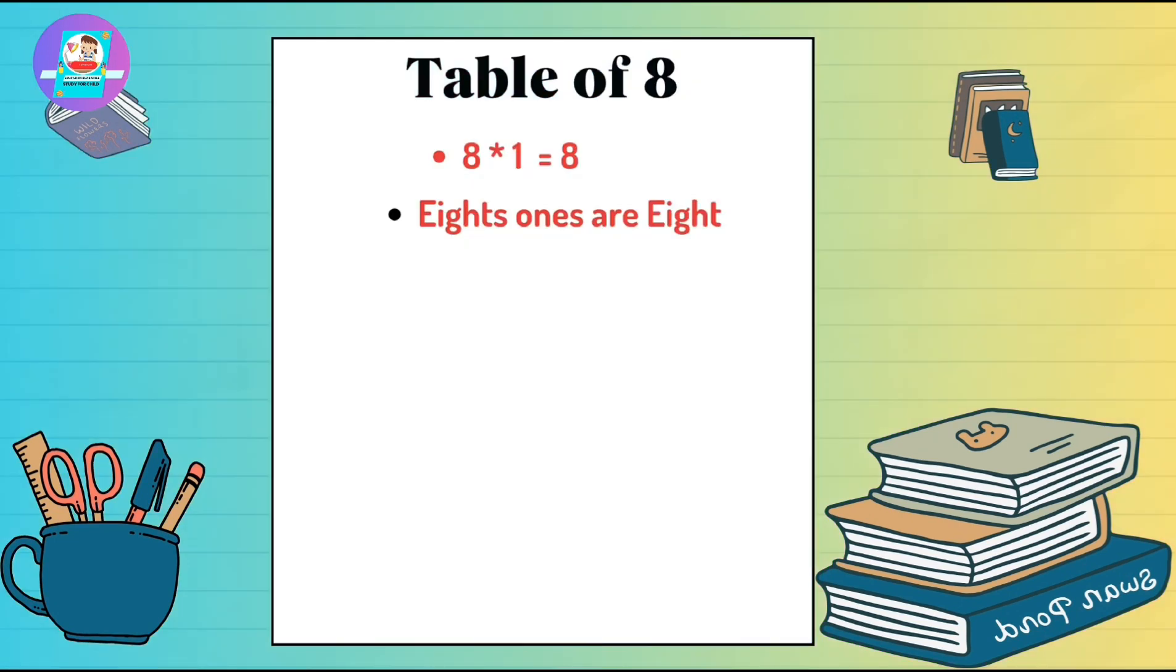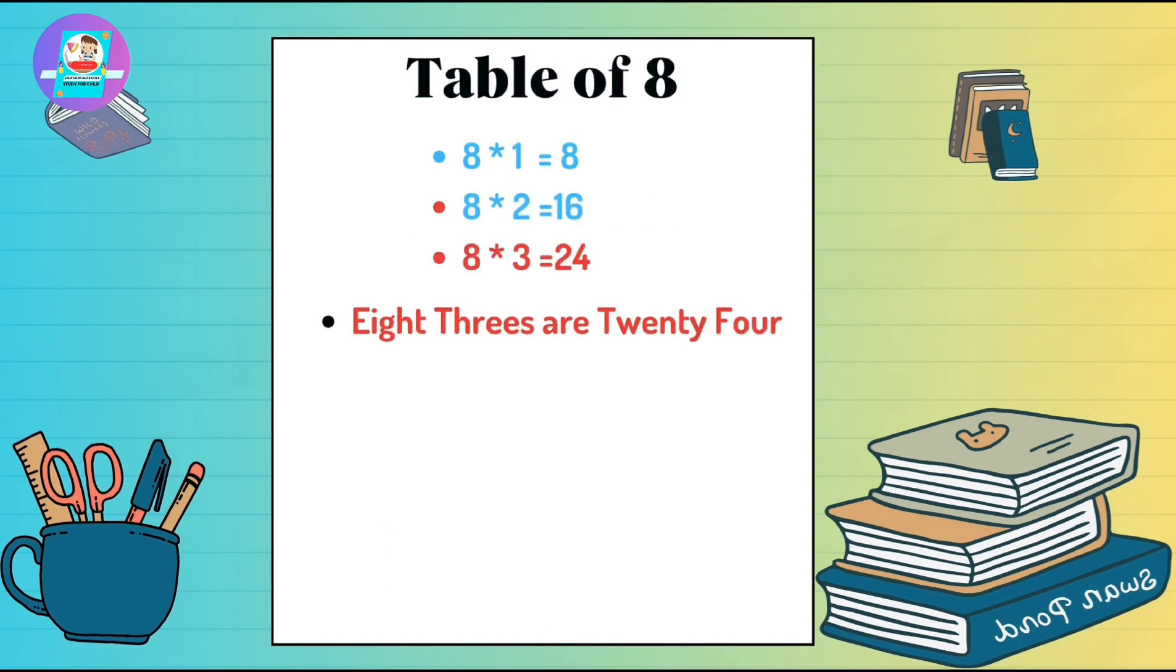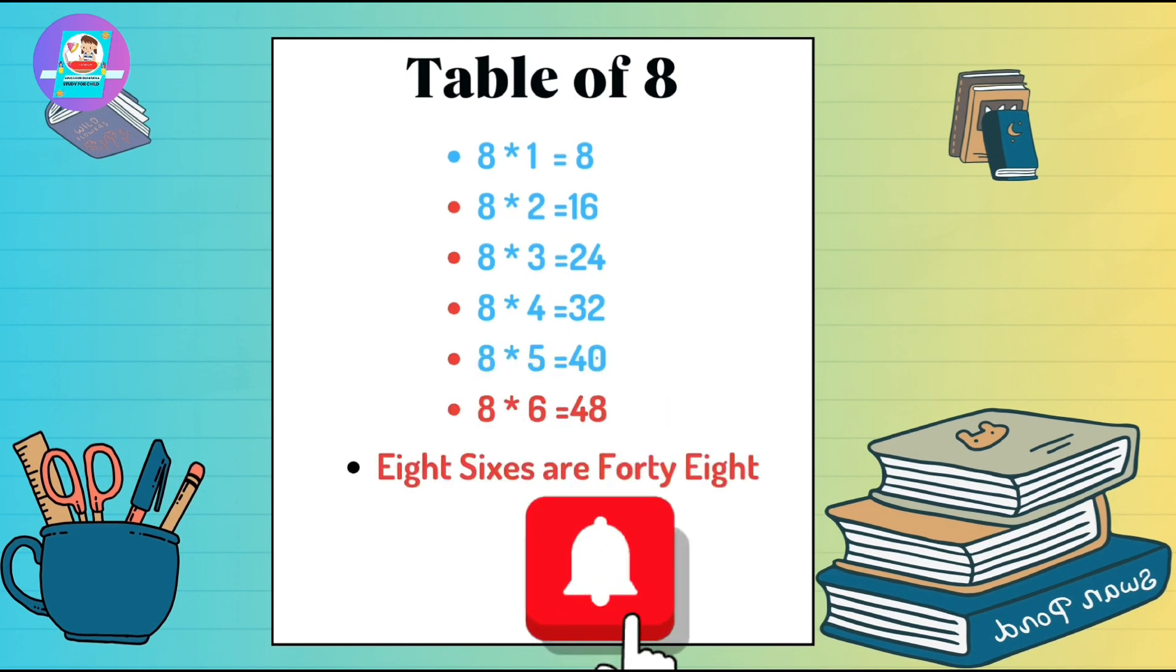Now we will learn table of 8. 8 1's are 8. 8 2's are 16. 8 3's are 24. 8 4's are 32. 8 5's are 40. 8 6's are 48.